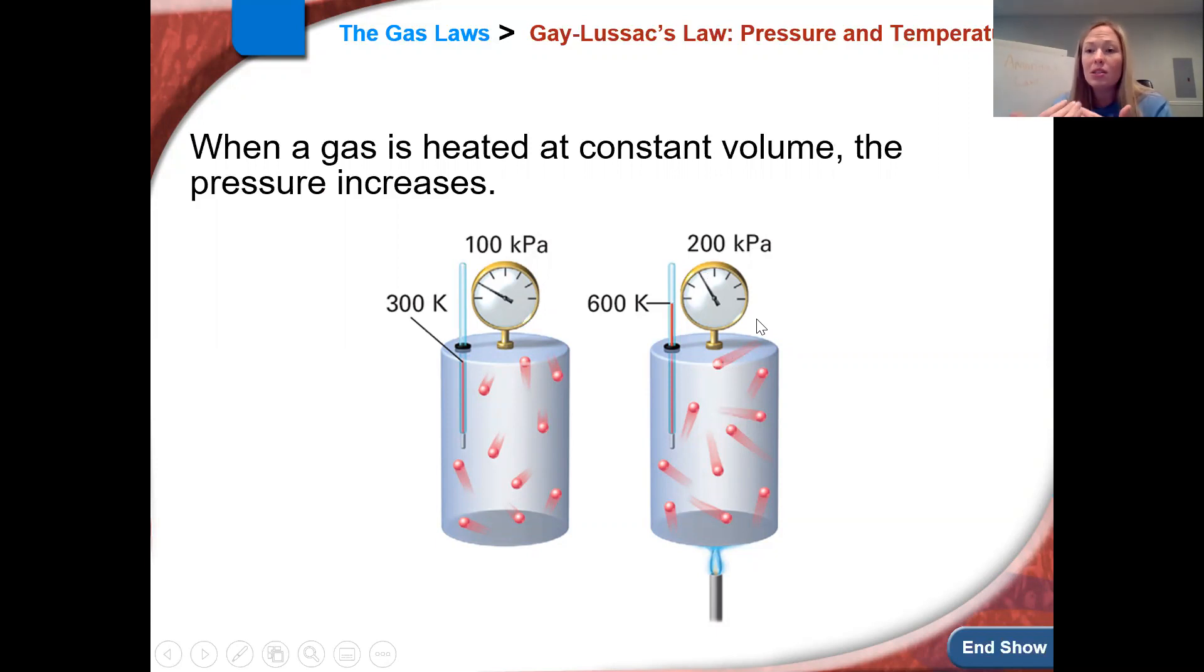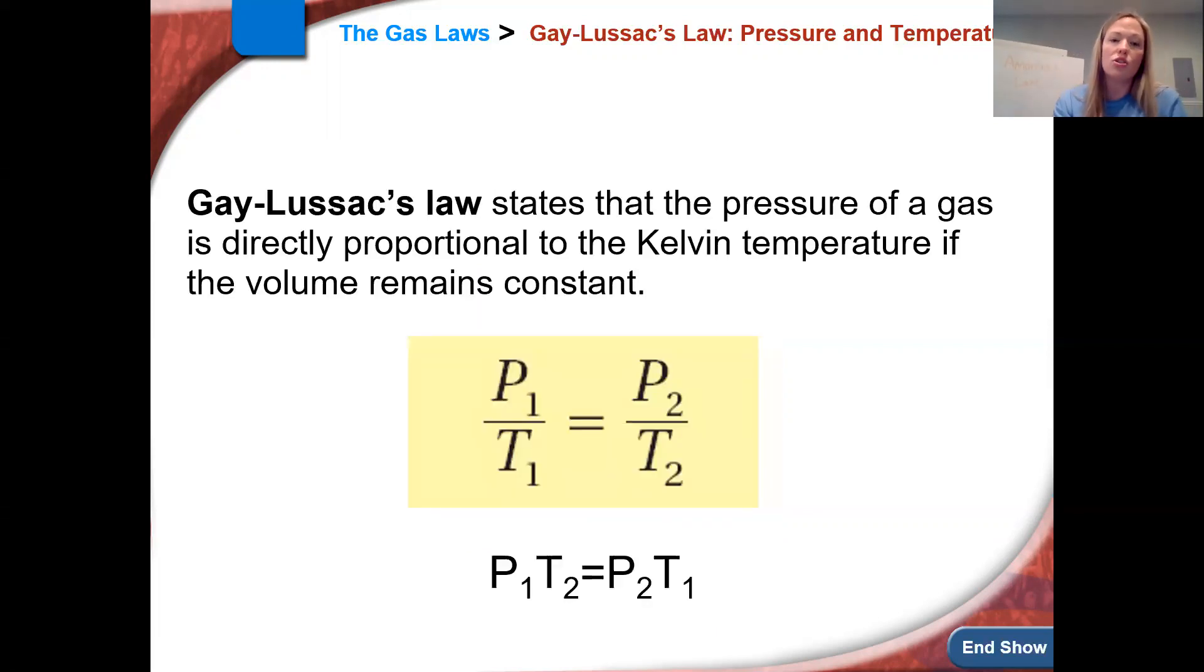So you can see it's a direct relationship. And why is that? Well, these particles are moving, you can think of them as twice as fast. Okay, and if they're moving twice as fast, they're exerting so much more force on their container, which is what pressure is. It's how much force is exerted per square inch or per unit of area. Okay, so the faster those particles are going, which is increasing temperature, the more pressure is exerted on the container. So it's a direct relationship.